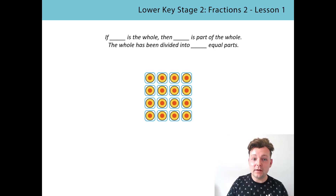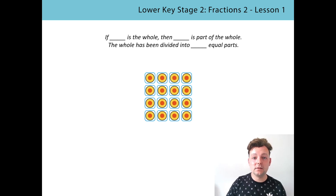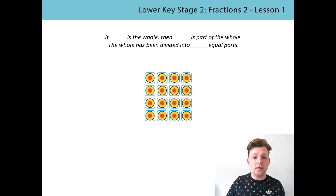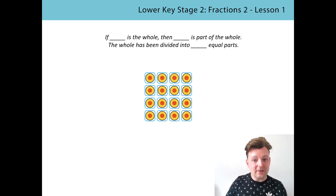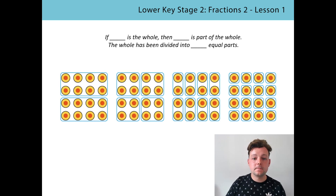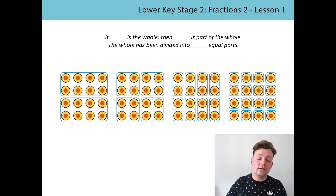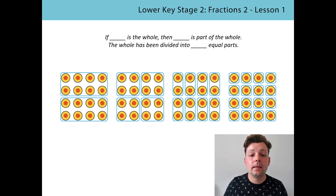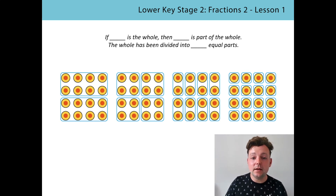This time I would like you to pause the video, read the stem sentence to yourself filling in the missing parts, then play the video and we'll say it together. If 16 cakes is the whole, then one is part of the whole. The whole is being divided into 16 equal parts. Here you can see how on each of our sets of cakes, each set had 16 cakes in them, but we have divided them equally into groups.